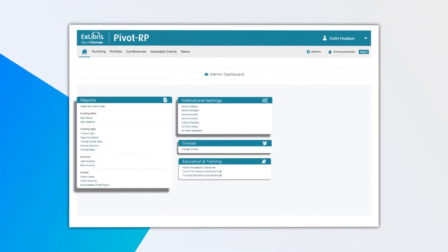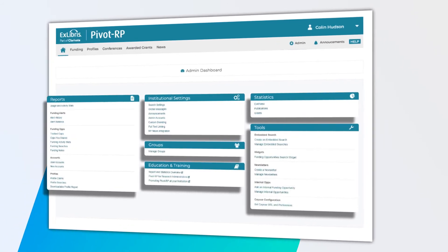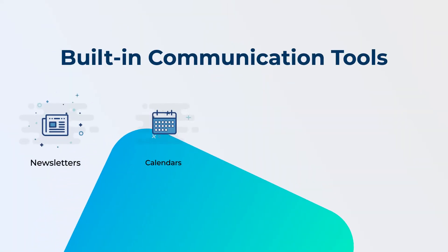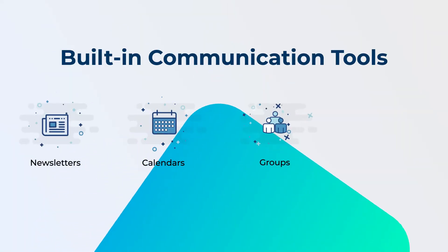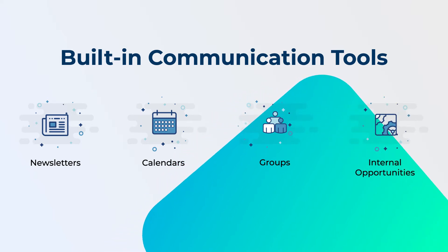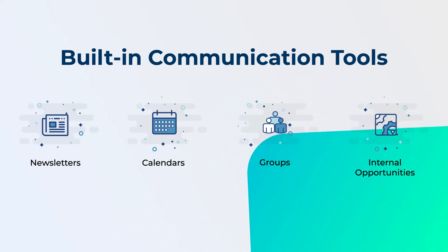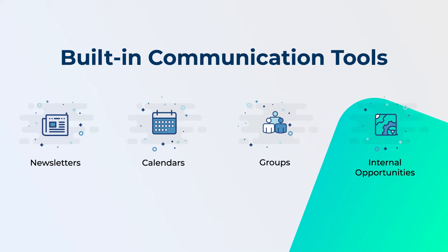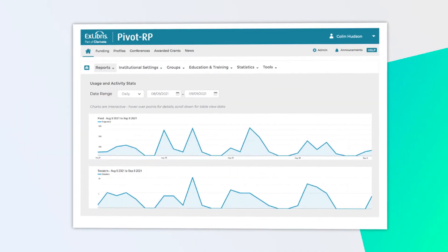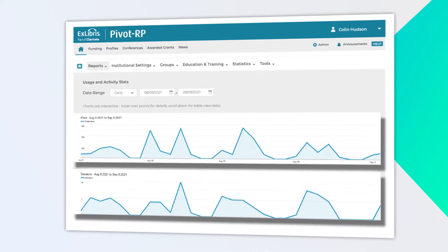PivotRP streamlines the work of the research office. Built-in communication tools, sharing features, integrated calendars and more make it easy for administrators to promote relevant funding opportunities to specific individuals and groups across their organizations. Then demonstrate ROI using analytics and usage reports.